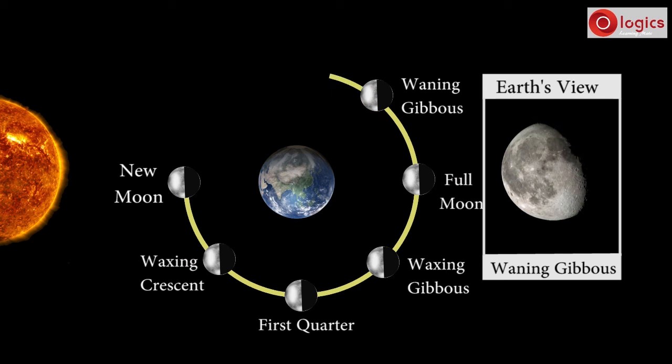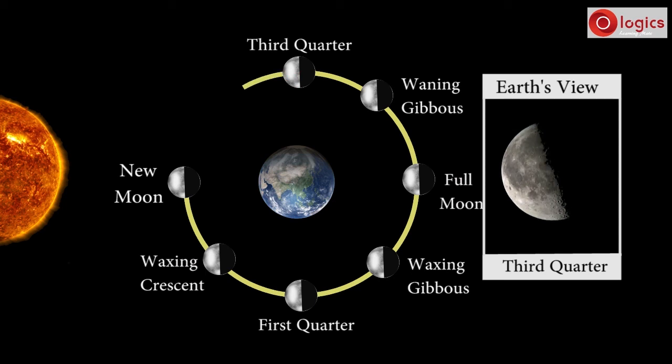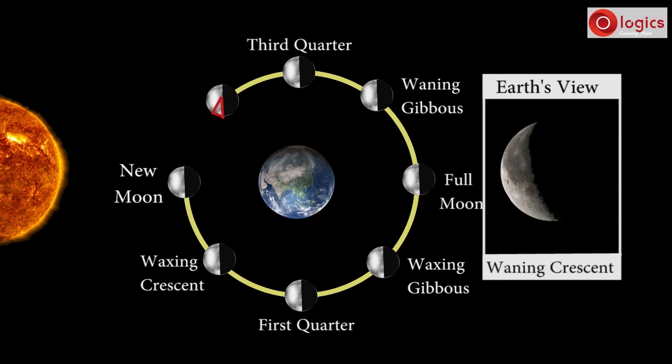Moon reaches this position. At this position, only half of the brighter side is visible, which is called Third Quarter. As Moon reaches here, only a little part of the brighter side is visible, called Waning Crescent.